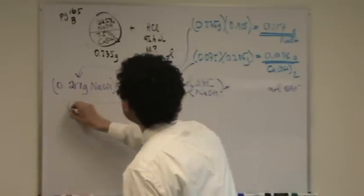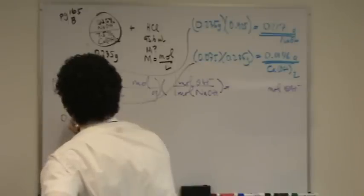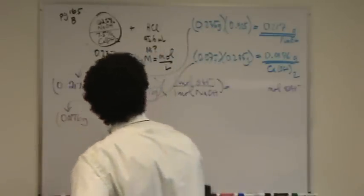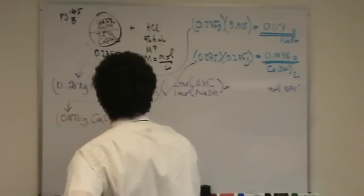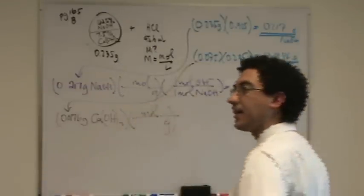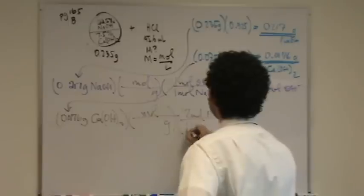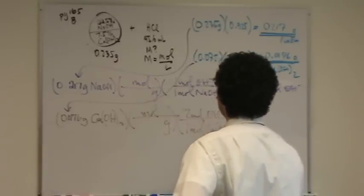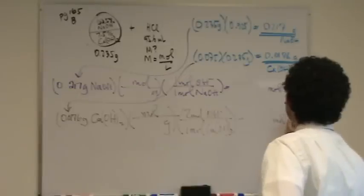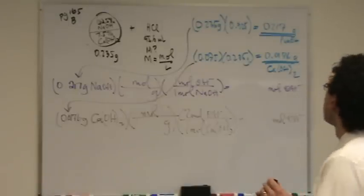So we're also, if you can follow this arrow with that part, 0.176 grams of calcium hydroxide times its molar mass, times 2 moles of hydroxide for every 1 mole of Ca(OH)₂. So in both cases I'm going to find the moles of a hydroxide, is that okay?